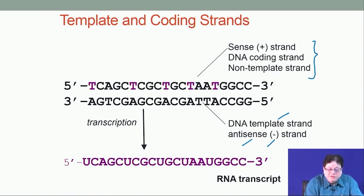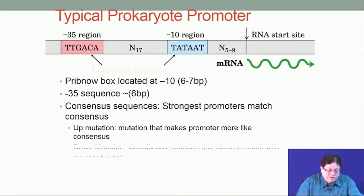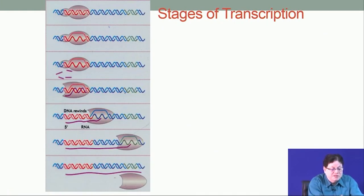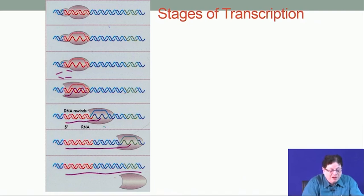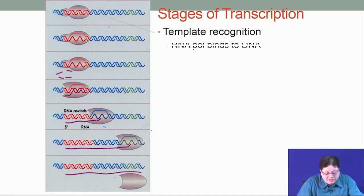The sense strand has the same sequence as the RNA that will be transcribed, with two differences: in RNA, T is replaced by U, and the sugar is ribose instead of deoxyribose. The sigma factor binds the Pribnow box and then falls off, allowing RNA polymerase to move and bring in oligonucleotides. This synthesis also proceeds in the 5' to 3' direction; once it reaches the termination step, everything falls off. The key steps are: template recognition, RNA polymerase binding, DNA unwinding, initiation, elongation, and termination.